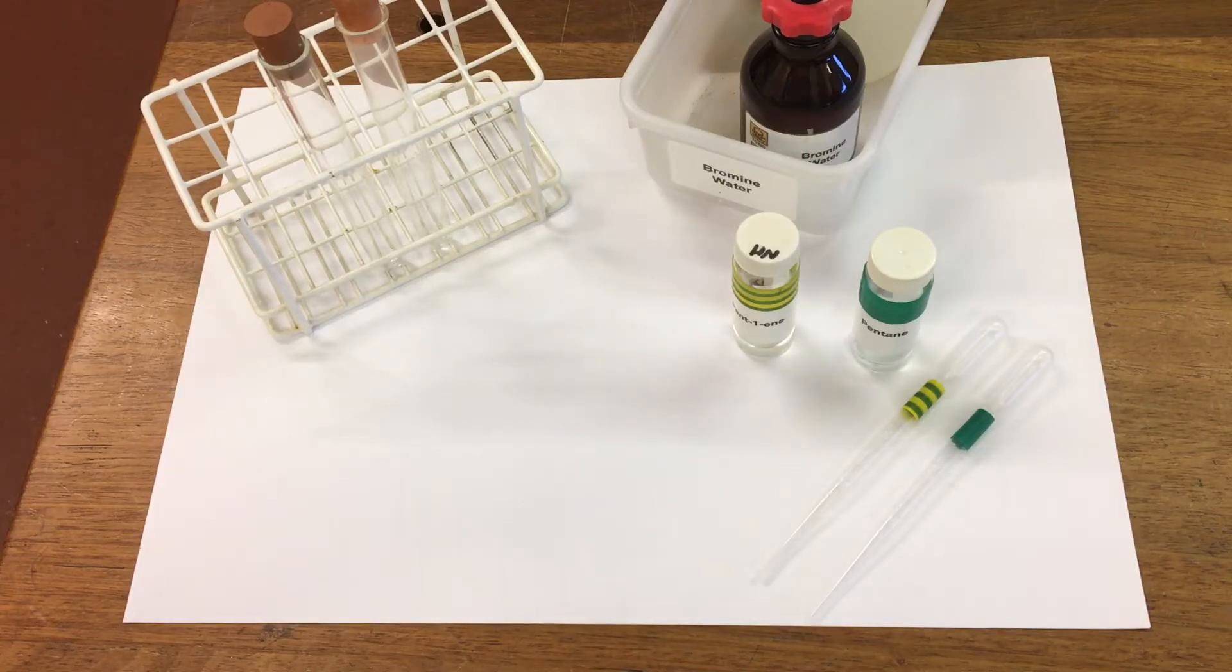In this experiment we're looking at the bromine test. Bromine water can be used to tell the difference between an alkene and an alkane. An alkene will turn brown bromine water colorless, and this occurs for all unsaturated compounds containing double covalent bonds. Alkanes are saturated molecules and contain only single covalent bonds.